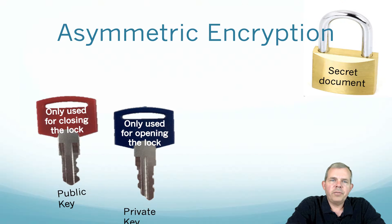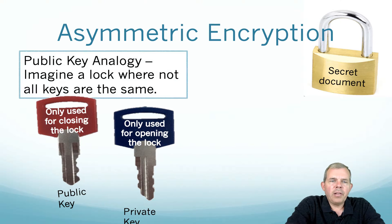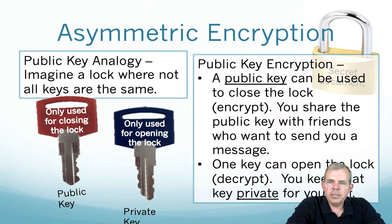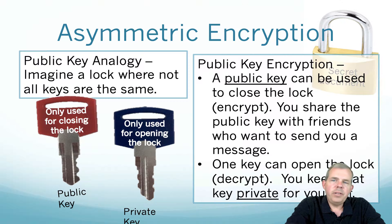The asymmetric encryption process is how we solve that problem. Imagine a lock where not all the keys are the same — we have a red key for locking the lock and a blue key for opening the lock. The red key is called the public key; the blue key is called the private key. The public key can close the lock, or encrypt, and you share that key with your friends — you can even publish it online. However, everyone has their own unique private key for decryption, so the encryption works.